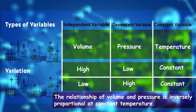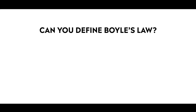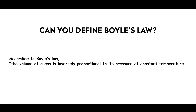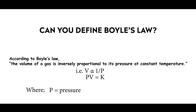The relationship of volume and pressure is inversely proportional at constant temperature. According to Boyle's Law, the volume of a gas is inversely proportional to its pressure at constant temperature. That is, P times V equals K, where P is pressure, V is volume, and K is constant.